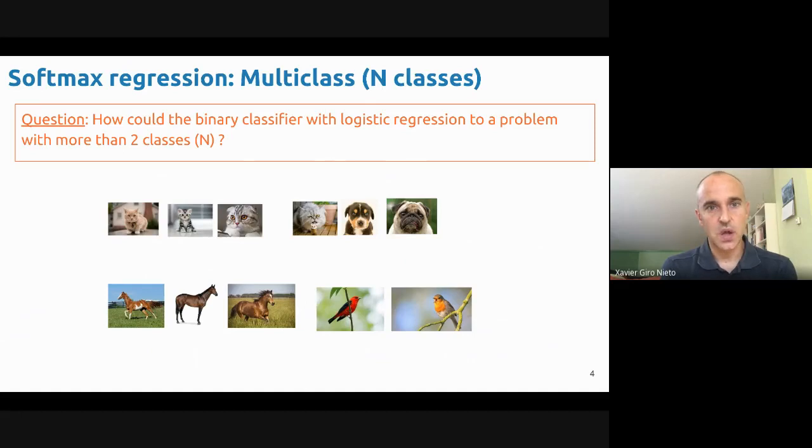So question for you: how do you think we can address the problem of adapting this scheme of logistic regression to a problem with more than two classes? I'll give you some hints. Remember in the first lecture I showed a figure explaining how we could encode multiple classes. Which kind of representation is normally used when we want to encode different classes?